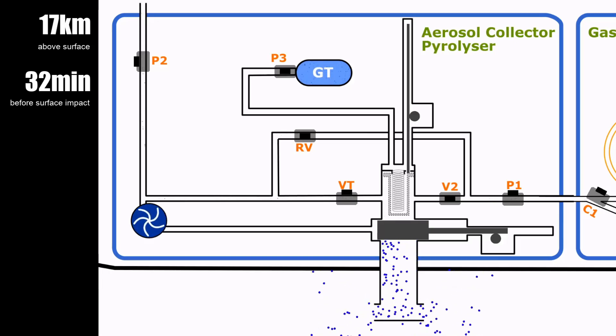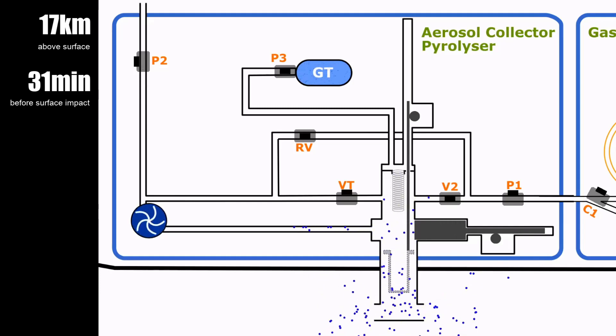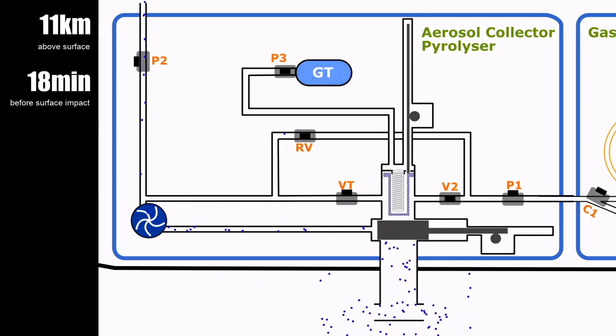So once again, we turn on the pump unit, open the gate valve and extend the collection filter into the sampling tube. 31 minutes before surface impact, pump unit is turned off, filters retracted into the oven and the gate valve is closed. Oven is then turned on and pyrolysis begins.